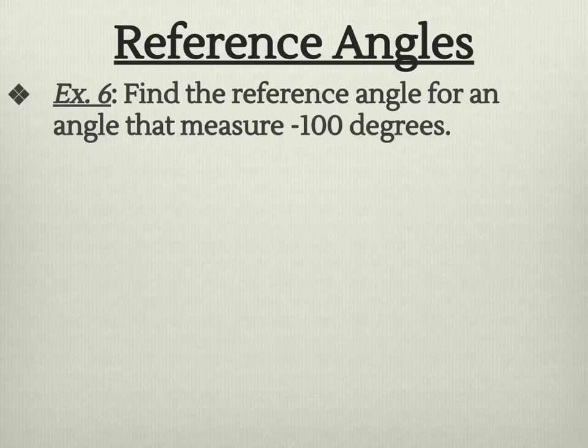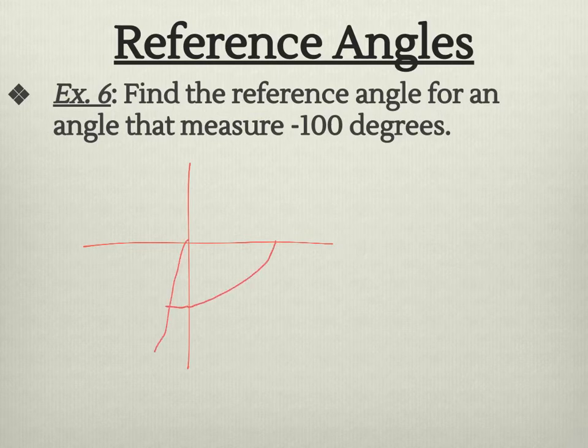Find the reference angle for an angle that measures negative 100. I'm going to draw that negative 100. Well, if I come down here, this is going to be negative 90, so a little bit more. So this is the 10 in here, but that's not the piece I want. I want this angle, so it's going to be a positive 80 degrees. It's acute, it's positive, and it comes back to the x-axis.